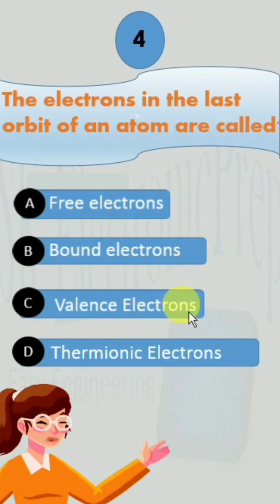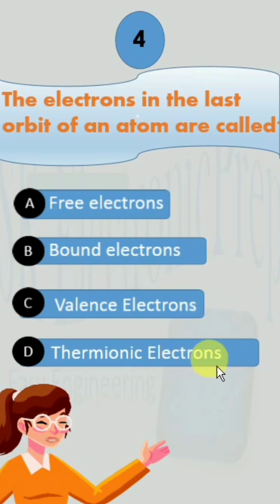A valence electron is an electron that is attached to an atom and can participate in the formation of a chemical bond. Thermionic electrons are the free electrons that emerge from a matrix surface when heat energy is applied.